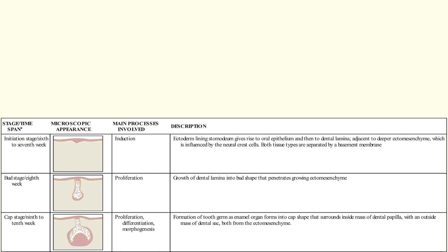The cap stage is when the basic shape of the tooth starts to take place. The enamel organ forms a cap, which surrounds the dental papilla, which is all surrounded by the dental follicle. The primary mechanisms involved are proliferation, morphogenesis, and differentiation.